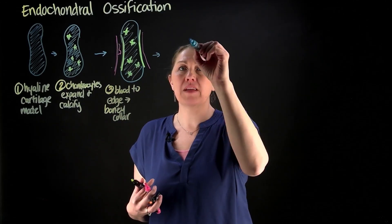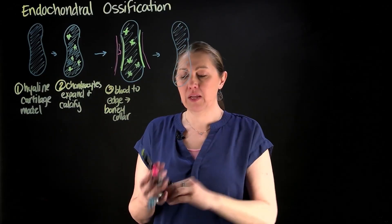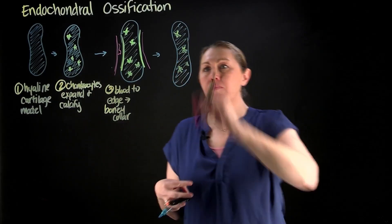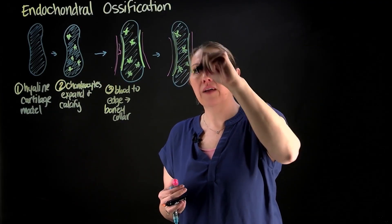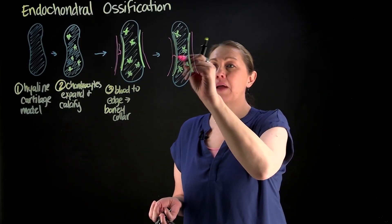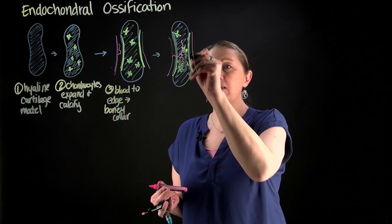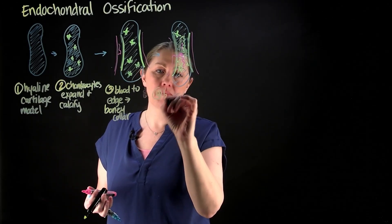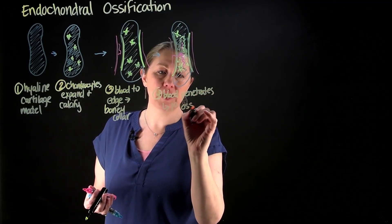To recap: we started with the hyaline cartilage model, filled with hyaline cartilage. The chondrocytes expanded and calcified. We put blood at the edges so the osteoblasts could put a superficial sheet of bone on the edges. But now we want bone on the inside. To build bone, we need blood supply. The blood supply will penetrate, and that allows us to start laying down bone on the inside. This gives us what we call our primary ossification center.